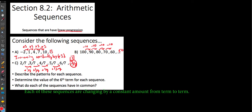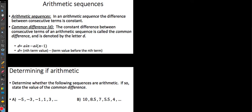They're easy to spot. How can we define them more technically? Arithmetic sequences are sequences where they have a common difference. In an arithmetic sequence, the difference between consecutive terms is constant. The word 'difference' implies subtraction, so when we talk about a common difference, we're talking about what it is changing by from term to term.